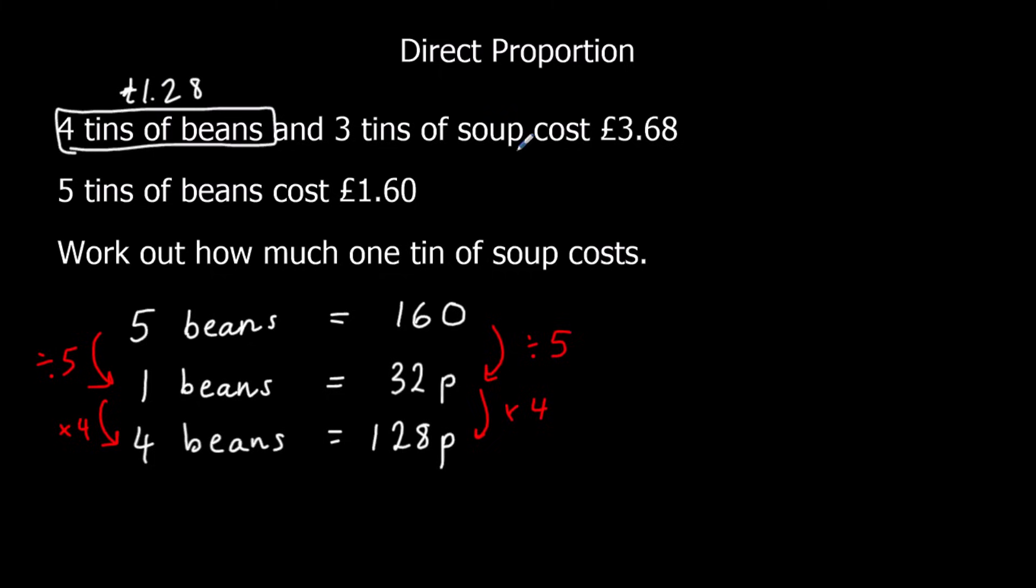And 3 tins of soup costs £3.68. So I can work out how much 3 tins of soup costs, by doing £3.68 take away £1.28. So that is £2.40.